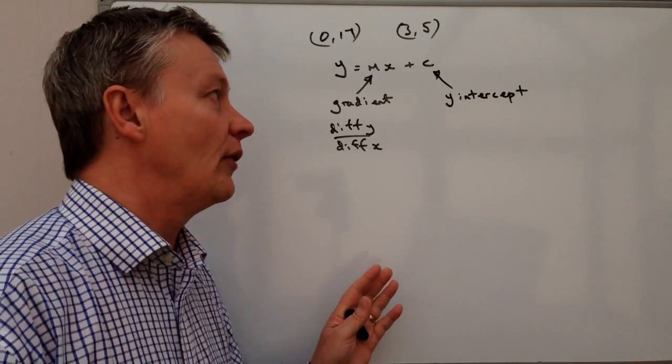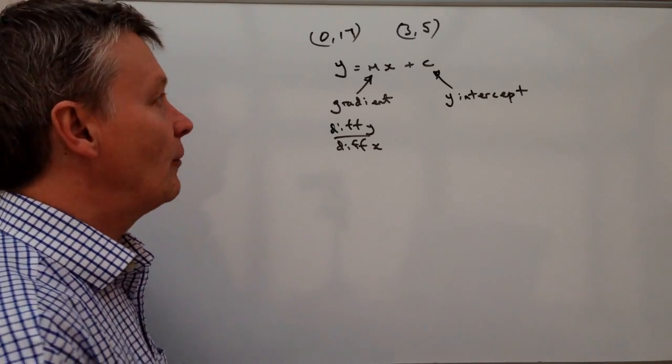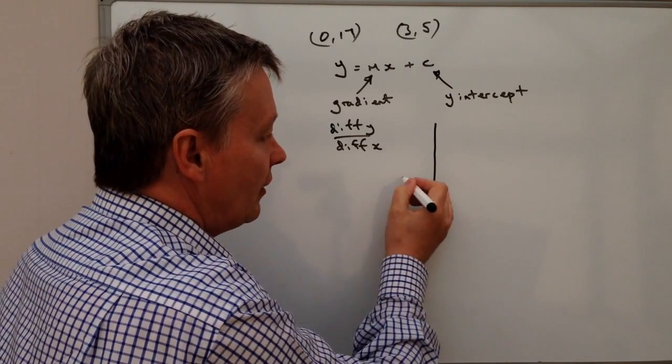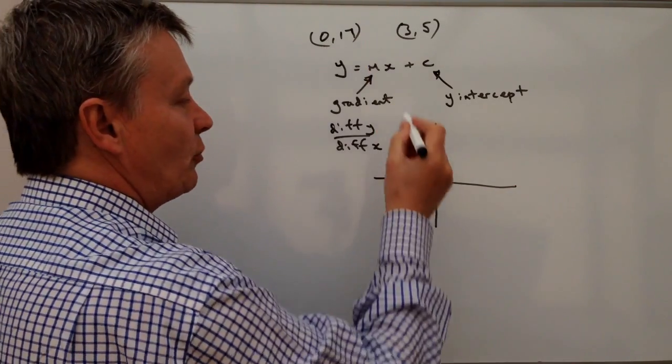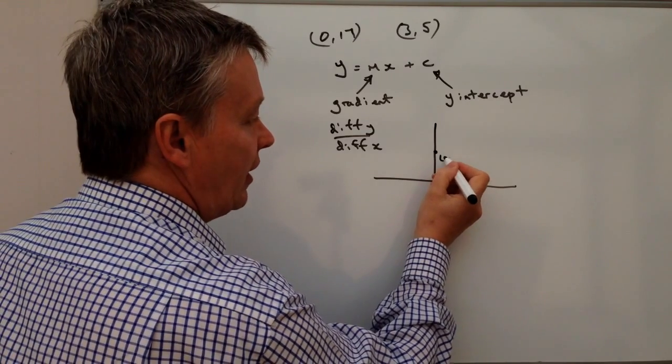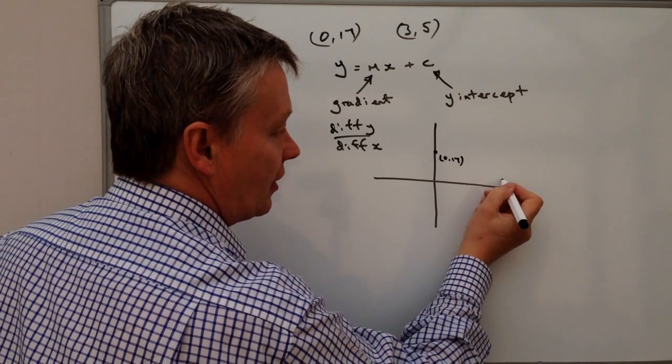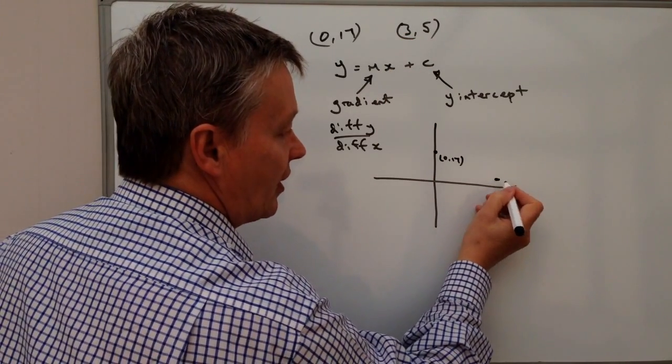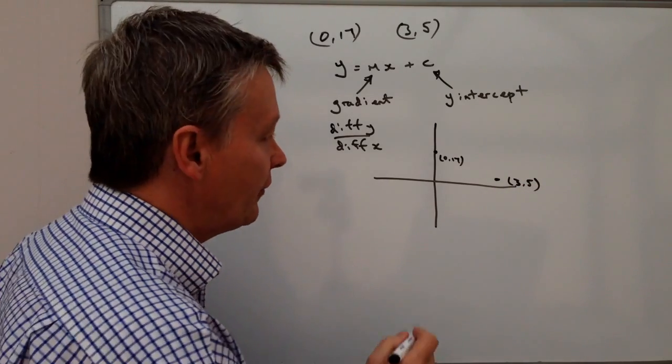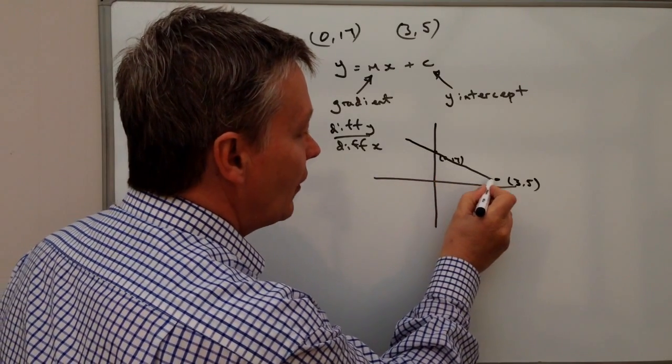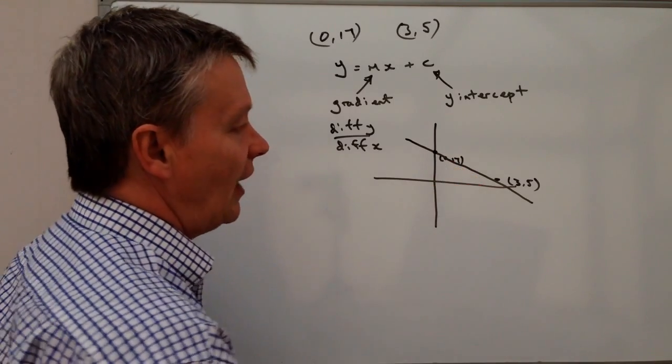So in other words, what we're looking for is two pieces of information that satisfy this particular question, which is that you've got a straight line. Now along that straight line, there are two points. One of them is (0,17), which is this point here, and the other one is (3,5), so it's actually going to be, let's say, round about there. So 3,5. It's probably not a great diagram, but it'll give you some indication that actually we've got a straight line that goes like that.